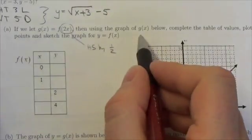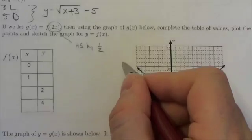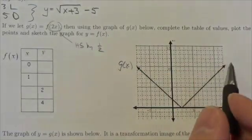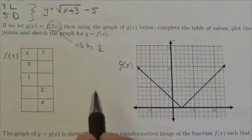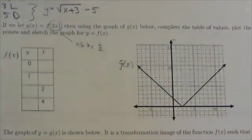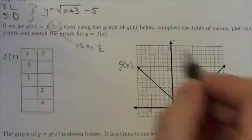Now we're going to use the graph of g of x below. So this graph right here is g of x to complete the table of values and plot the corresponding points to get the graph of f of x. Okay, so this is f of x, this is g of x.